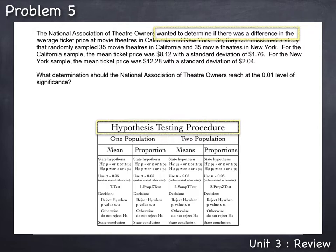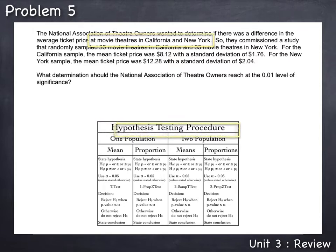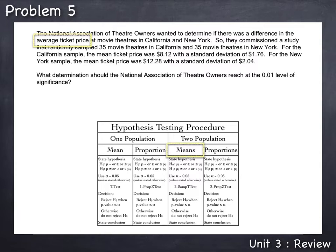To determine if this test involves one or two populations, we look at the fact that they wanted to determine if there was a difference in the average ticket price at movie theaters in California and New York. So here it's explicitly talking about two different populations: movie theaters in California and movie theaters in New York. To determine if we're doing a test involving means or proportions, the problem mentions a difference in the average ticket price, and the mean is an average. So we'll be conducting a hypothesis test procedure for two population means.